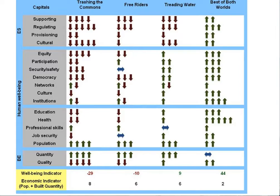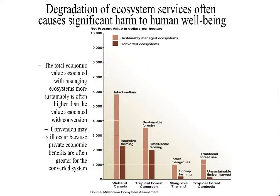We can estimate the changes in not only the ecosystem services produced, but also the impacts on various other components of human well-being. Looking at the bottom, the 'trashing the commons' scenario had the highest value in terms of built infrastructure and population quantity, but the lowest value in terms of overall well-being including ecosystem services. Similar results come out of many of these studies — as we begin to incorporate the value of ecosystem services, we begin to understand the real benefits of restoring the landscape.